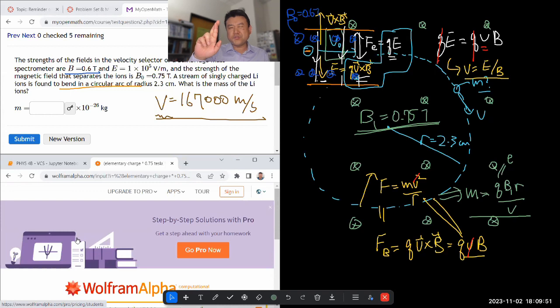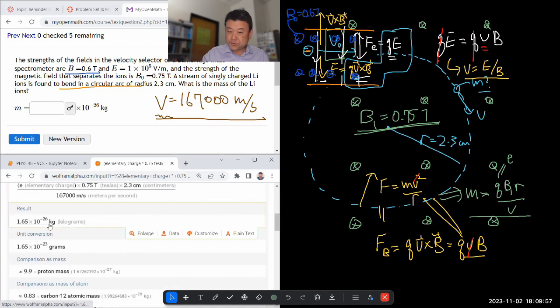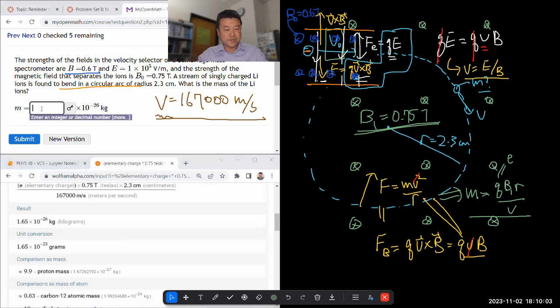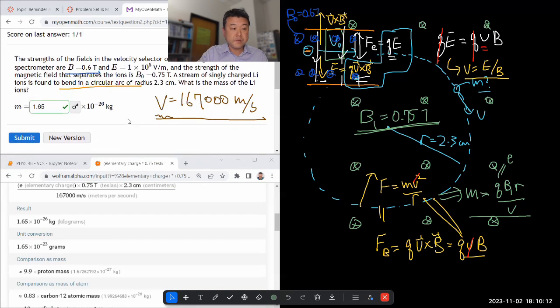Hopefully we are getting unit of kilograms. Because if we don't, I made a mistake somewhere. We are getting it in unit of kilograms. That's great. Power of 10 to the minus 26. Matching power. Good. So it should be 1.65 times 10 to the minus 26 kilograms. Yeah. Good.